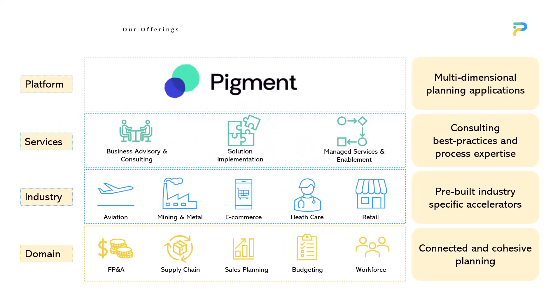Our offerings include Pigment, which is a multi-dimensional planning application — we deploy and implement it for our customers. We also provide business and advisory consulting services for functions and domains like FP&A, supply chain, sales planning, budgeting, workforce planning, cost benefit analysis, and all sorts of functional expertise. We are EPM partners and we also offer enablement services as a support desk for such applications.